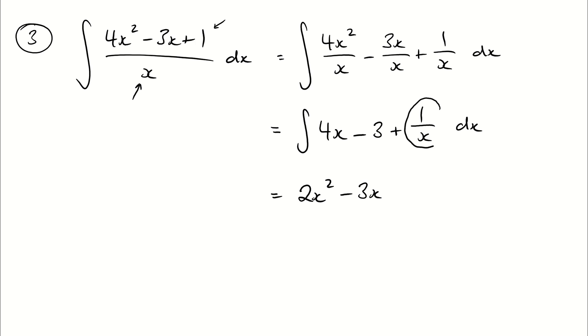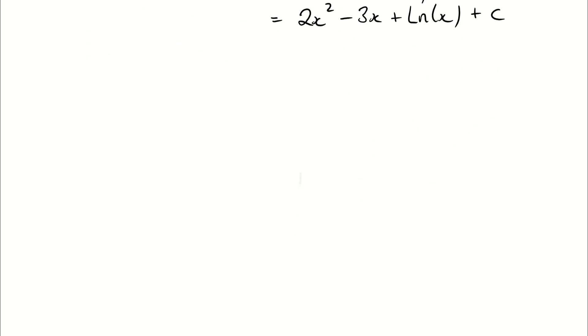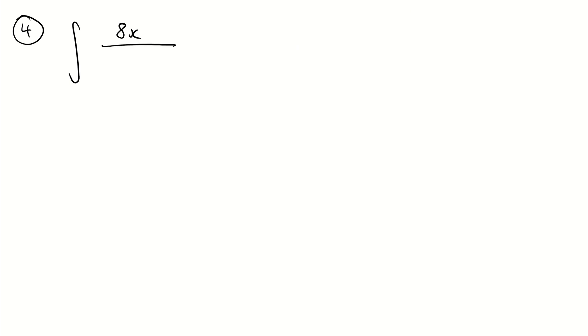Here's the key trick: anti-differentiating 1/x gives the natural log of x, because differentiating the natural log of x gives back 1/x. Now let's look at another common example: anti-differentiate 8x divided by (2x² + 1) with respect to x.